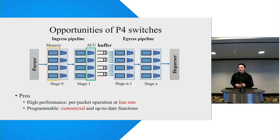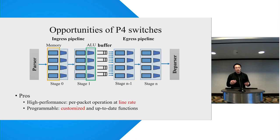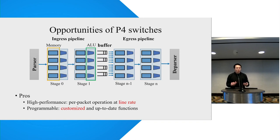In recent years, we have witnessed the advantages of P4 switches. They are high-performance and programmable. For example, P4 switches can support Tbps-level throughput, so they are very suitable for handling high traffic volume scenarios. Moreover, we can program the pipeline of the P4 switch to support customized operations, so we can deploy customized and up-to-date functions to meet different requirements.